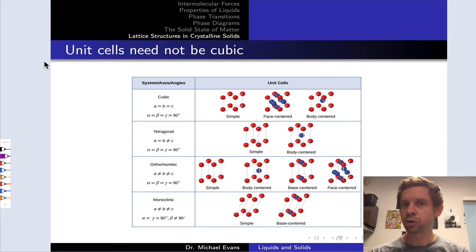Thus far we've focused on cubic unit cells. This slide and the next make the point that the unit cell need not be cubic. Unit cells can take other shapes, for example, rectangular prisms in the case of the tetragonal unit cell, or parallelograms in the case of the monoclinic unit cell.